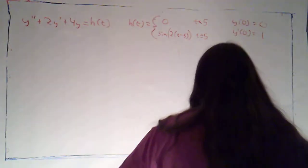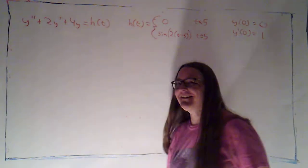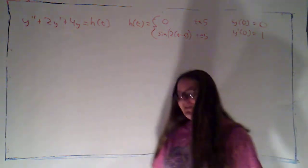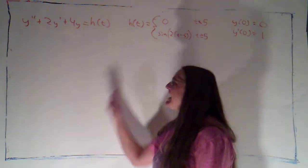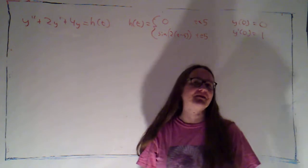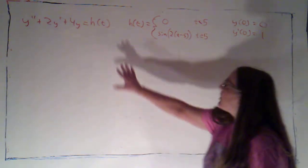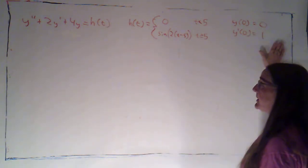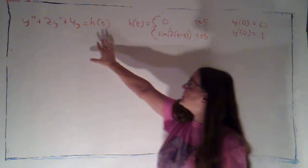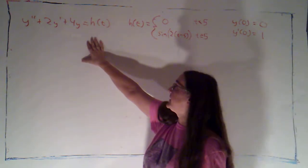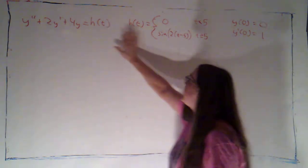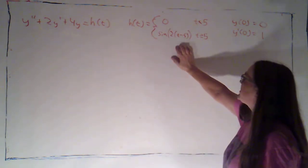We're going to solve a differential equation using some of these nifty formulas that we've spent so much time deriving, using the method of Laplace transforms. I've got an initial value problem here that corresponds to a forced harmonic oscillator. My forcing function I'm calling h of t — that's this piecewise function.